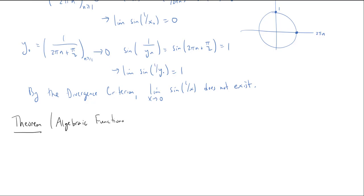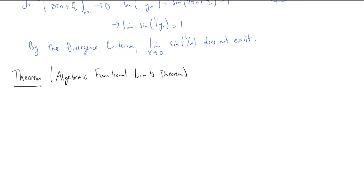So here comes a new theorem, but it's really just a redux of our old theorems. This is the algebraic functional limits theorem. OK, so the algebraic functional limits theorem, we're going to start with some functions. And we know that limits exist for these. So let's say we have two functions, f and g, from some common domain, d. And a will be some limit point of d. OK, such that,